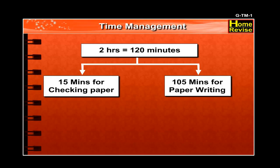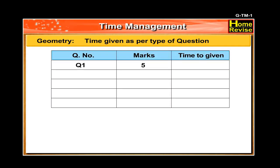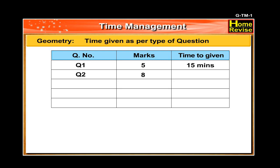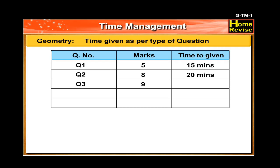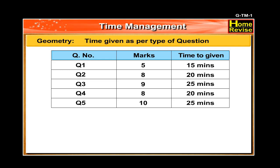So according to this, you now have only 105 minutes to write your paper. Let us see how to utilize these 105 minutes: for Question 1 which carries 5 marks, devote about 15 minutes; for Question 2 which carries 8 marks, give about 20 minutes; for Question 3 which carries 9 or 10 marks, give about 25 minutes; for Question 4 which carries 8 marks, give about 20 minutes; and for Question 5 which carries 10 marks, give about 25 minutes.